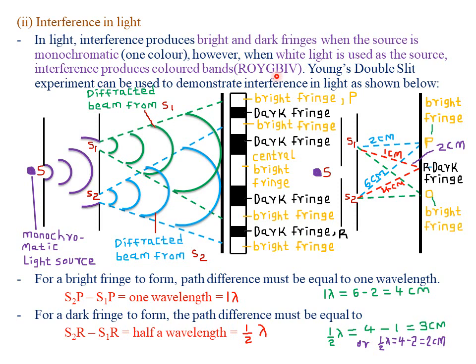To investigate that, we use what we call the Young's double slit experiment. It is called double slit because it has two gaps or two slits, that is S1 and S2. The Young's double slit experiment can be used to demonstrate interference in light.